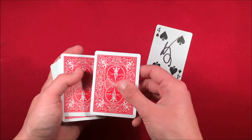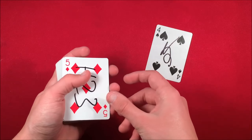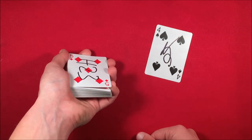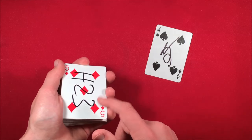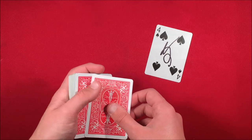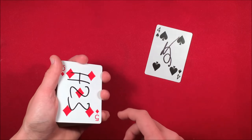As you have the spectator sign their own card, this way they're really focused on making their own signature, they're not looking at you. You need to be able to flip over the top card and catch a pinky break and then leave the deck face down with your palm like this, this way the spectator can't see the face-up card. So while they're signing their card, you just very briefly flip over that card, catch a pinky break.